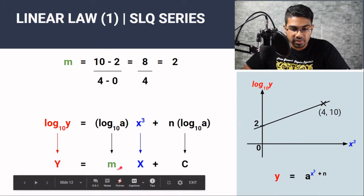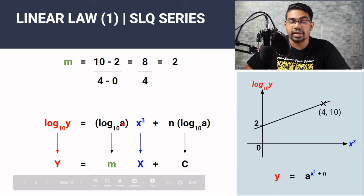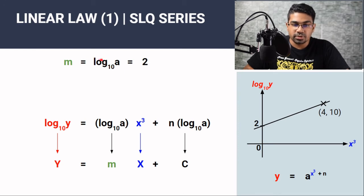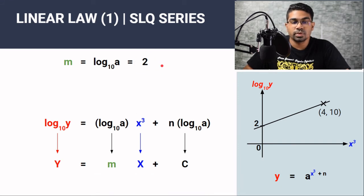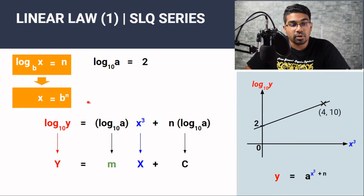By comparison, the gradient is actually log₁₀a. So now we can conclude that the gradient equals log₁₀a here by comparison, which we have found the value to be 2. So log₁₀a equals 2. Now we can find the value of a by converting this log form to the index form. This is how we convert log form to index form. So if log base b of x equals n, then x will equal b to the power of n.